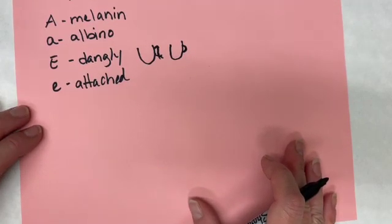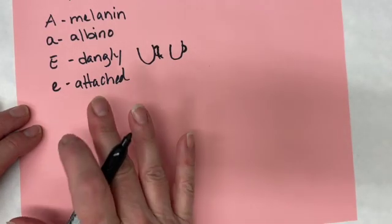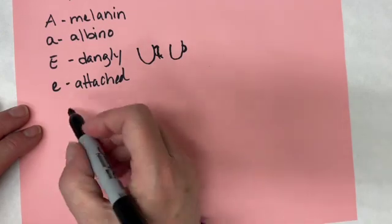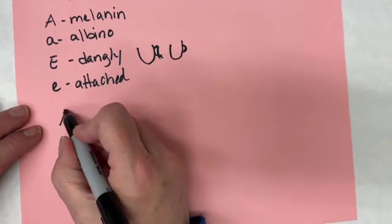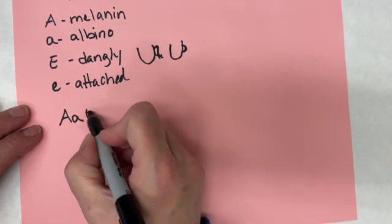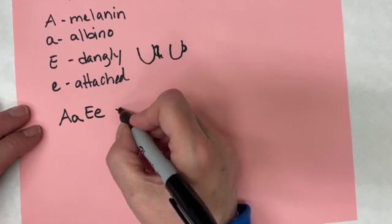Okay, so let's take a look at what it would be if we had two individuals that are both heterozygous for both skin color and earlobe shape. That looks like this: heterozygous for both the ability to make melanin and earlobe shape, and we're having both individuals be that, so both individuals would have the same genotype.